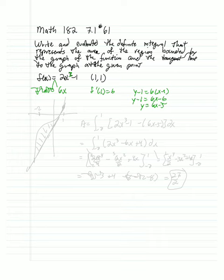Now we have the equation f of x equals 2x cubed minus 1, and the equation 6x minus 5. So let me go ahead and draw a graph of these.